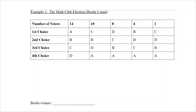Let's take a look at an example. We're using the same example from the previous video with the Math Appreciation Society and their election for club president — the same preference schedule. There are four candidates: Alicia, Boris, Carmen, and Dave, abbreviated A, B, C, D. A first place vote earns four points, second place earns three points, third place earns two points, and fourth place earns one point.